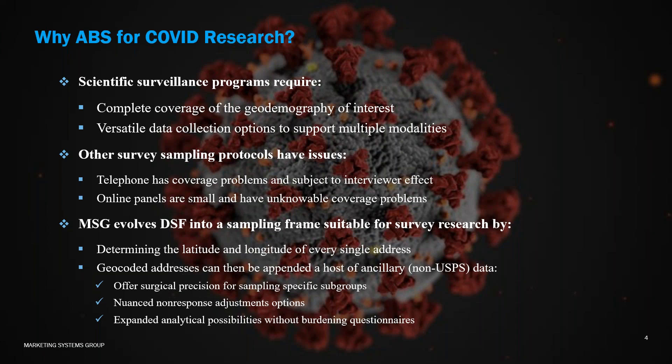As a result of all the appendages that MSG provides, one can have near surgical precision for sampling specific and rare subgroups. All the data available for the entire frame — for both respondents and non-respondents — can be used for nuanced non-response adjustment, which is becoming more important as response rates diminish. Additionally, this ancillary data can be added to respondents without adding corresponding questions to the questionnaire — it is essentially free information that can be used to expand analytical possibilities.